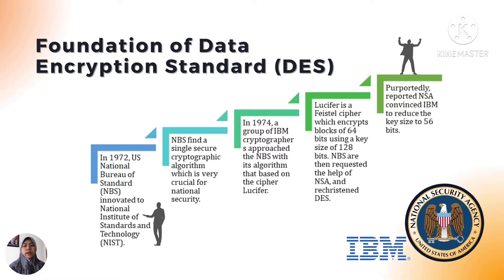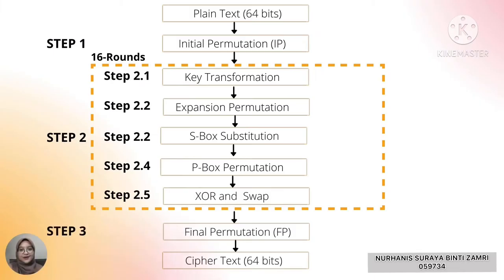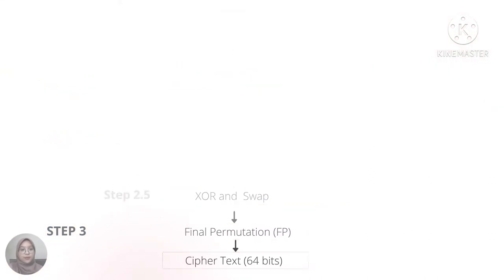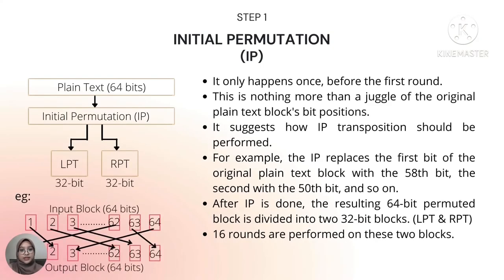We'll now move to Ms. Nurhan for more details about how DES works. Thank you, Farah, for the general overview about the Data Encryption Standard. We will go step by step and completely follow the entire process. I will start with step one, which is Initial Permutation, or IP. Initial permutation happens only once before the first round begins. We take the 64-bit block and perform a juggling of bit positions of the original plaintext — essentially a transposition of bits, which means interchanging positions.